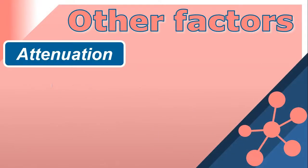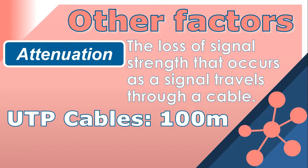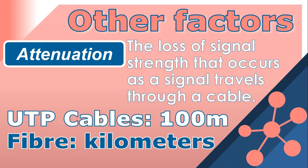Another factor to consider is attenuation — the loss of signal strength that occurs as a signal travels through a cable. This can be caused by factors such as distance, cable quality, and interference. UTP cables typically have a maximum length of 100 meters, or 328 feet, before requiring a signal booster or repeater, while fiber optic cables can transmit data over multiple kilometers, making them better suited for longer distance transmissions.